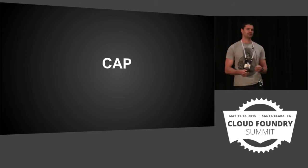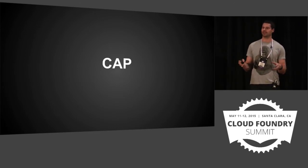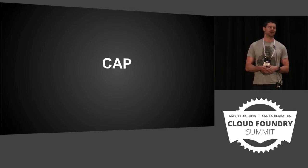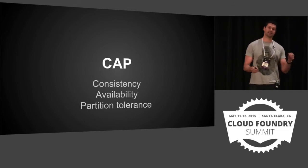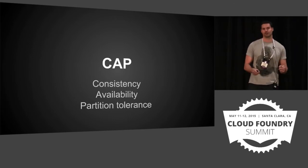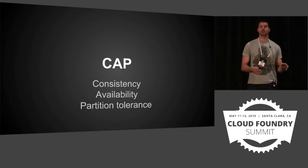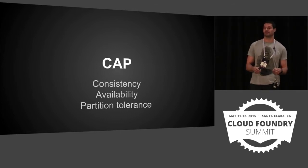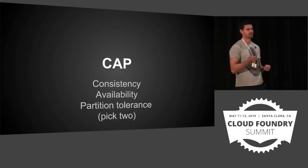Firstly, CAP. Can I get a show of hands for who knows what CAP is? Okay, that's not everyone, so I'll very briefly run through this. CAP: consistency, availability, partition tolerance — you can have two of those three in a distributed system. You cannot have all three. And that makes life difficult — you have to pick two.